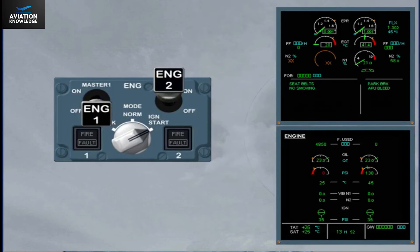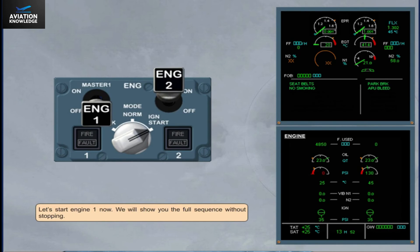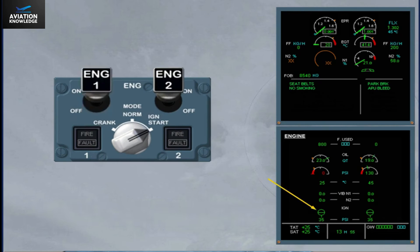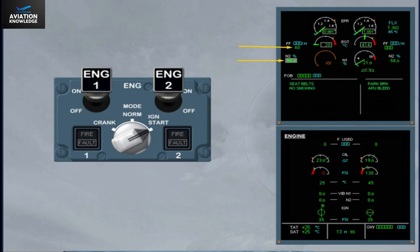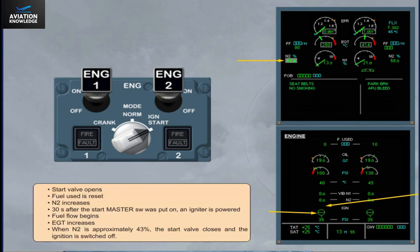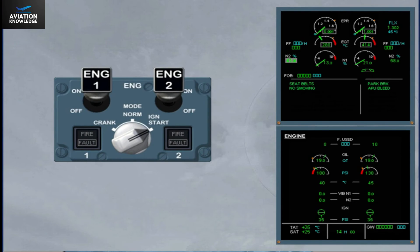Let's start engine 1 now, showing the full sequence without stopping. Start valve opens, fuel used is reset, N2 increases. 30 seconds after the start master switch was put on, an igniter is powered. Fuel flow begins and EGT increases. When N2 is approximately 43%, the start valve closes and ignition is switched off. At about 58%, N2 stabilizes and the grey background disappears, indicating that the engine 1 start sequence is finished.